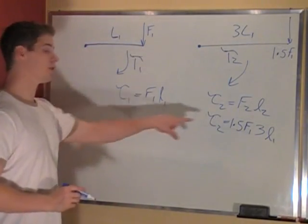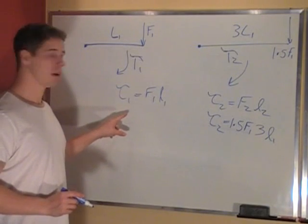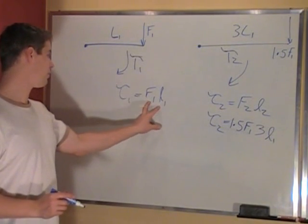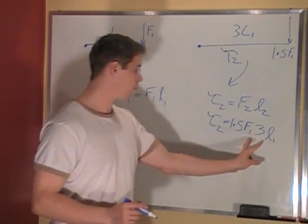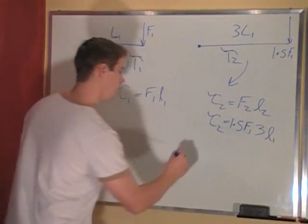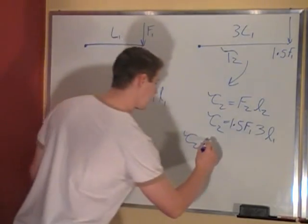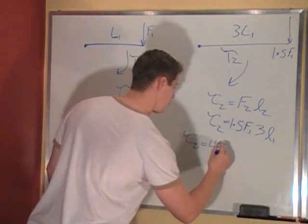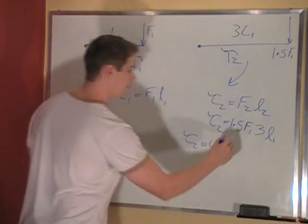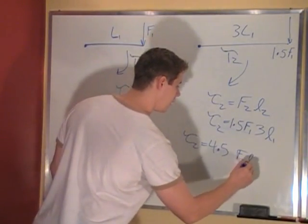Now we want torque 2 in terms of torque 1. We know torque 1 is F1 times L1, and we have F1 times L1 here. So torque 2 equals 1.5 times 3, which gives us 4.5, and then we have F1 L1.